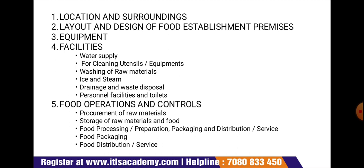Next is storage of raw material and food. Food storage facilities shall be designed and constructed to enable food to be effectively protected from contamination during storage and to permit adequate maintenance and cleaning to avoid pest accumulation. Next is food processing, preparation, packaging, and distribution services. This includes time and temperature control. The food business shall develop and maintain a system to ensure that time and temperature are controlled effectively where critical to the safety and suitability of the food, including at receiving, processing, cooking, cooling, storage, packaging, distribution, and food service up to the consumer.